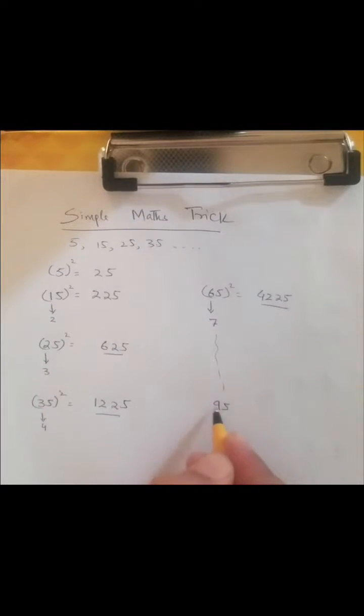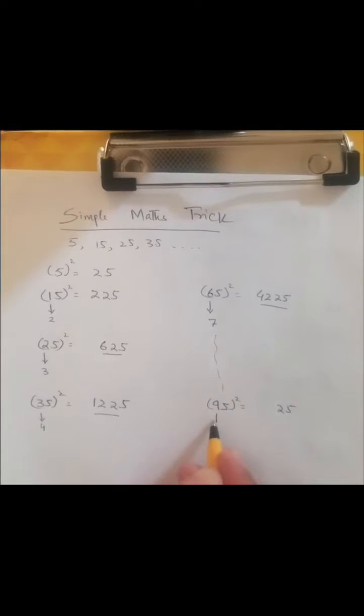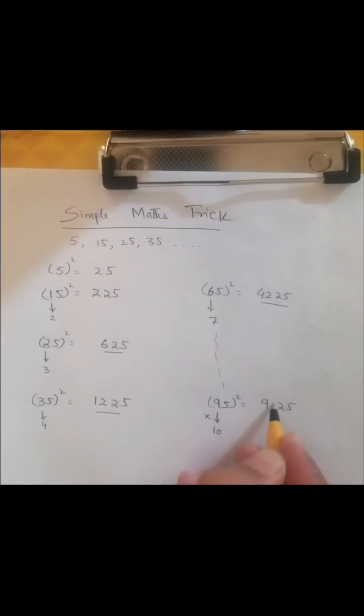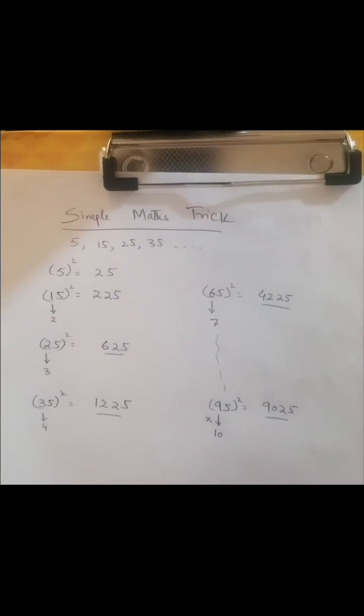And so on - for example, 95 whole square: first write 25, then the next number after 9 is 10, so multiply 9 with 10, you will get 90. This is the square of 95.